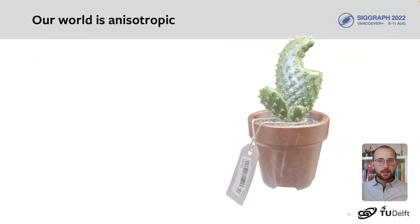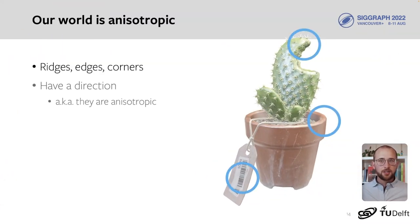Let's add a complicating factor. You see these ridges, edges, and corners. They all have a certain direction. They are anisotropic. Now this can be informative, so we'd like our convolutions to be anisotropic as well.